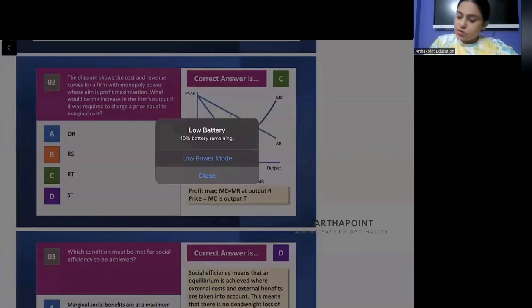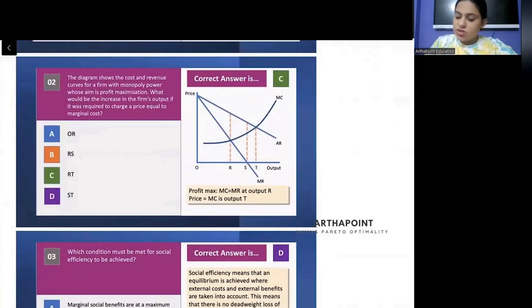The diagram shows the cost and revenue curve for a firm with monopoly power. What would be the increase in firms output if it was required to charge a price equal to marginal cost? It takes some time. Try to think yourself.